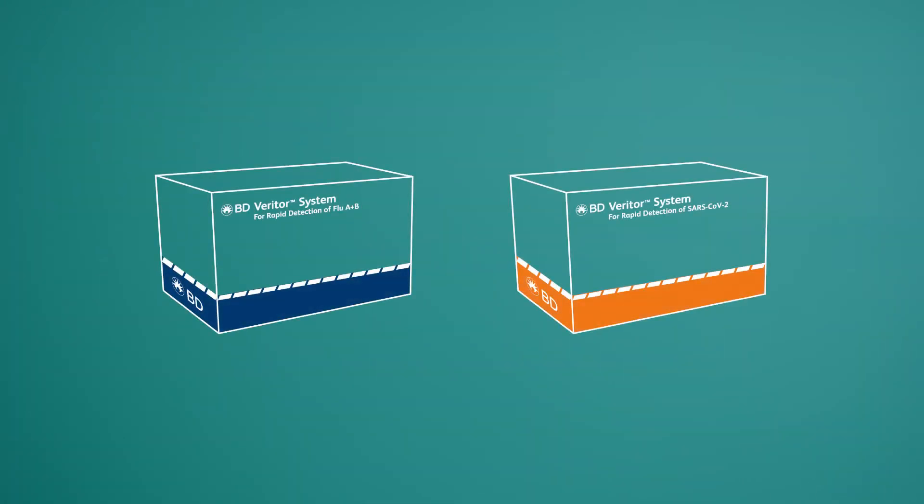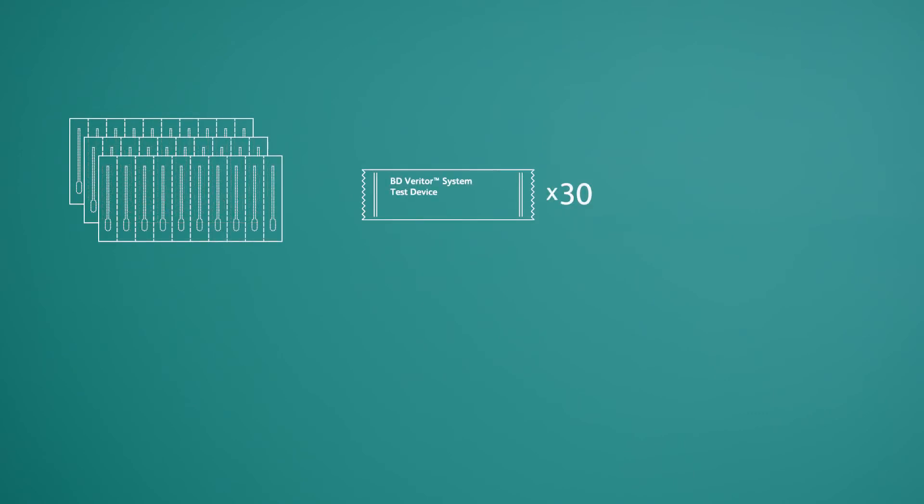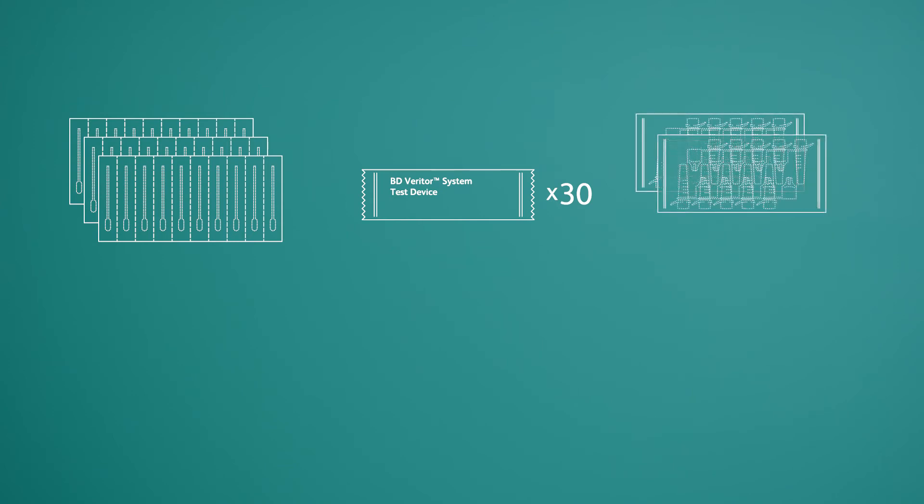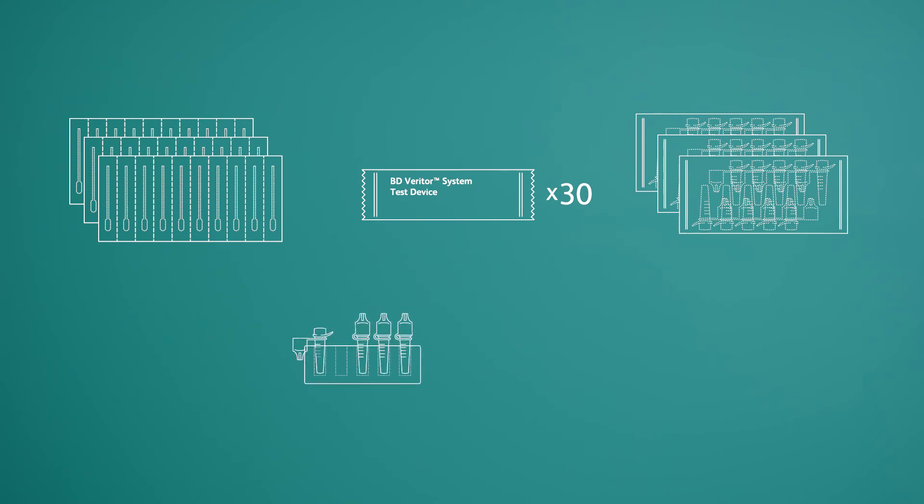Each kit includes the following components: 30 specimen collection swabs, 30 individually packaged test devices for use in your BD Veriter Plus analyzer, 30 reagent tubes for preparing your patient specimen samples, reagent tube trays to assist in specimen preparation, and control swabs for use in running control tests to confirm that your BD Veriter Plus system is operating correctly.